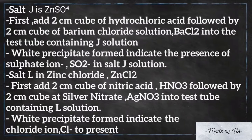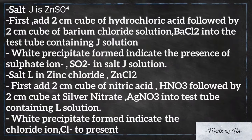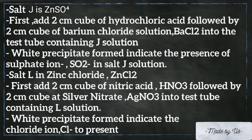Salt J is zinc sulfate. First, add two centimeter cubed of hydrochloric acid, followed by two centimeter cubed of barium chloride solution into the test tube containing salt J solution. A white precipitate forming indicates the presence of sulfate ion in salt J. Salt L is zinc chloride. First, add two centimeter cubed of nitric acid, followed by two centimeter cubed of silver nitrate into the test tube containing salt L solution. A white precipitate forming indicates the presence of chloride ion.